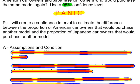I want to point out a couple of things. Notice that I am saying it's the difference. It does not say I will create a confidence interval to estimate the number of American car owners and the number of Japanese car owners who would purchase another model — we're looking at a difference. That tells the reader the numbers I'm looking at is the difference between these two things. We also have context: American car owners and Japanese car owners, and whether or not they would purchase again.